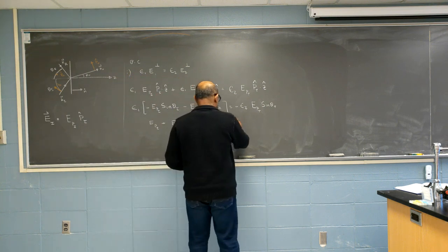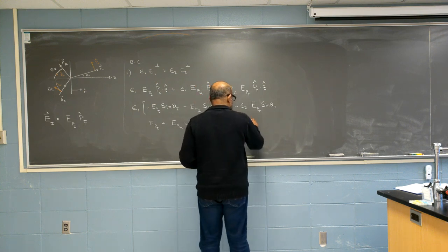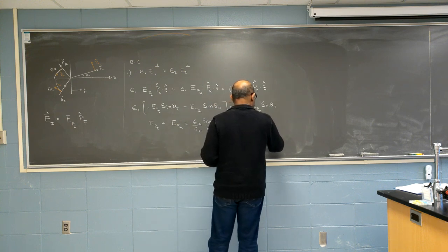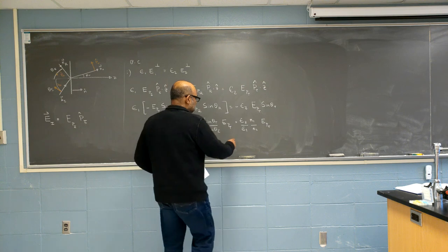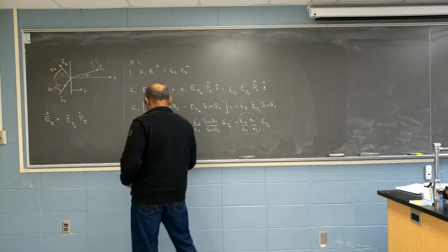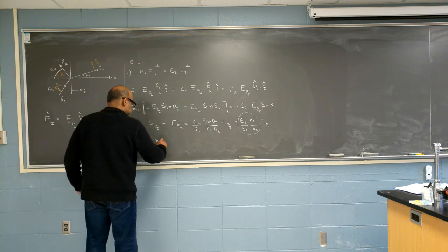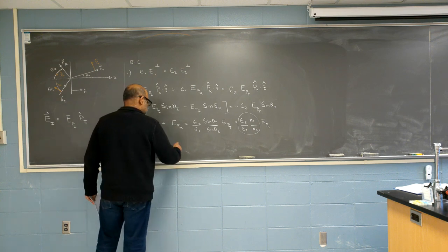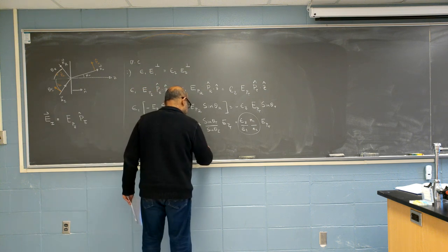I can simplify further using Snell's law. Sine θ_t over sine θ_i becomes N₁ over N₂. I'm going to call this factor beta. So that's the first boundary condition result.